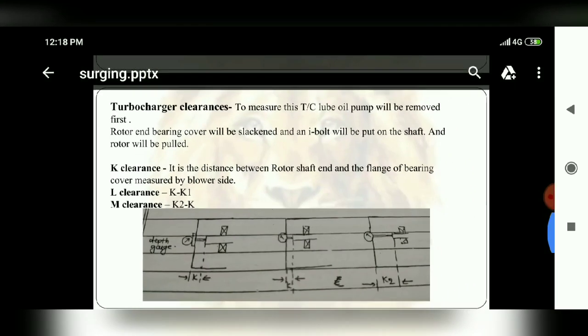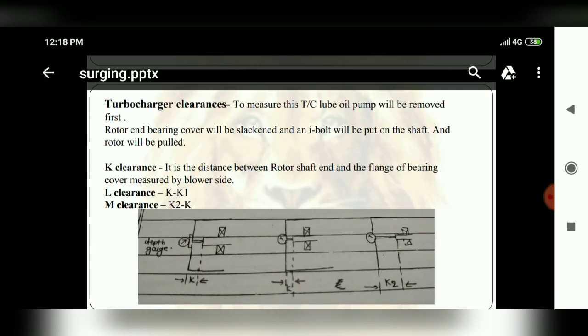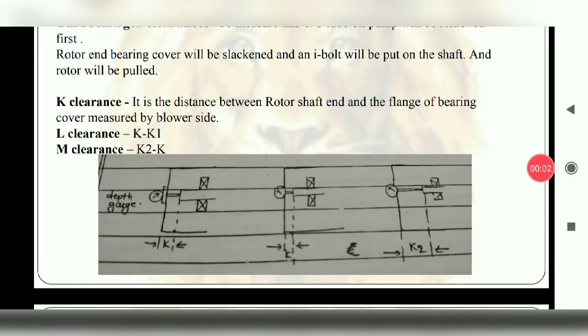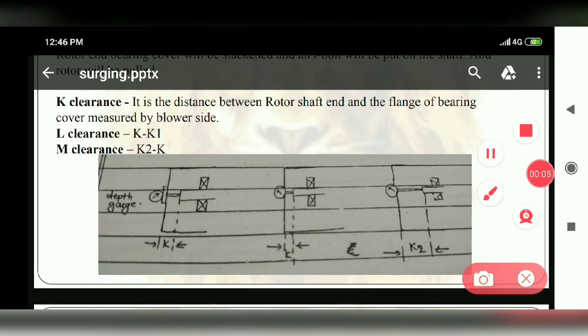So what are you going to do? We will remove the lube oil and then the end of the rotor we will fix the eye bolt. We will fix the eye bolt on the shaft. So the gap of bearing cover and the rotor shaft will be reduced, we have called K1. So L will be K minus K1.